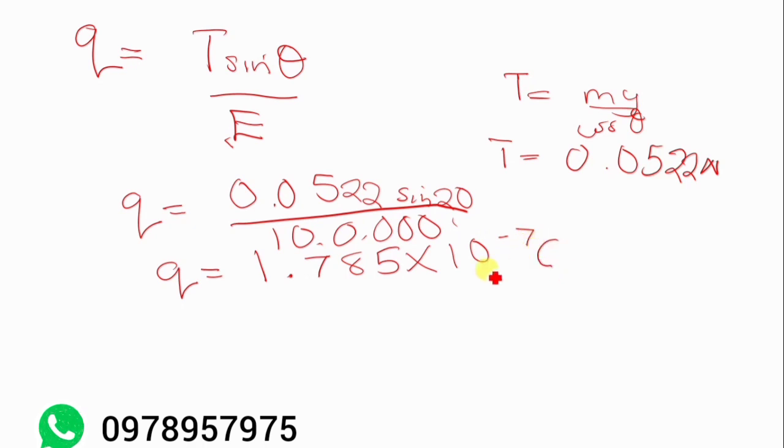So we're going to have 1.785 times 10 to the power of negative 7 coulombs. So others might want you to take it in micro coulombs. So what you're going to do is you're going to say 1.785 times 10 to the power of negative 1 micro coulombs.